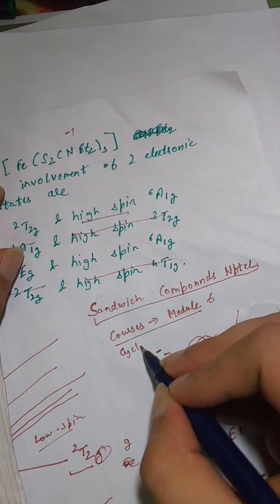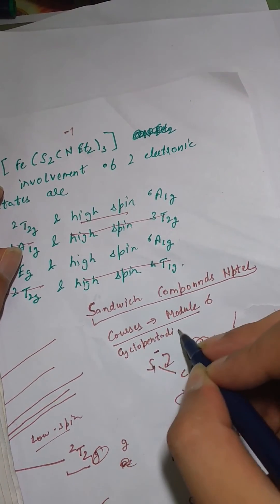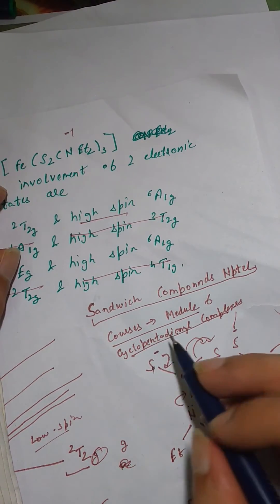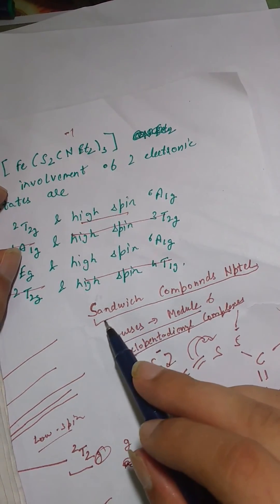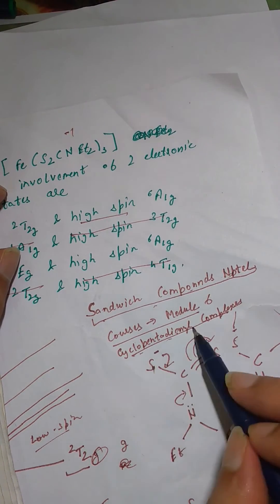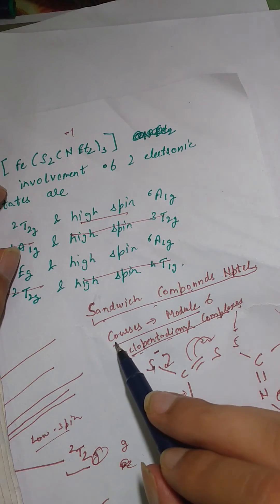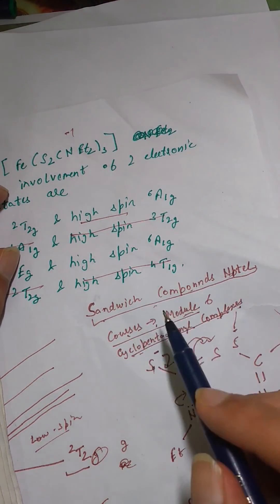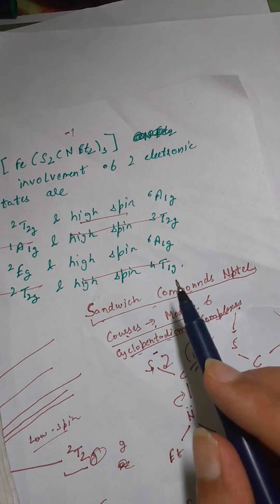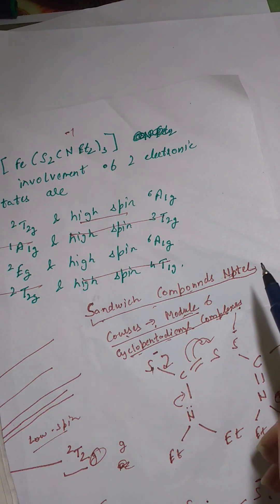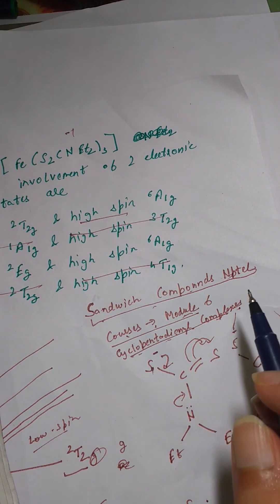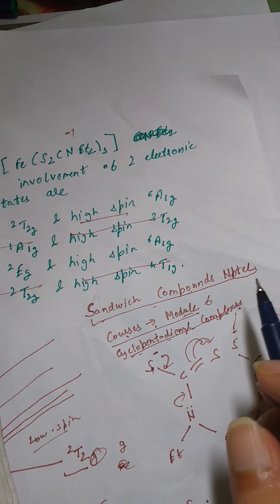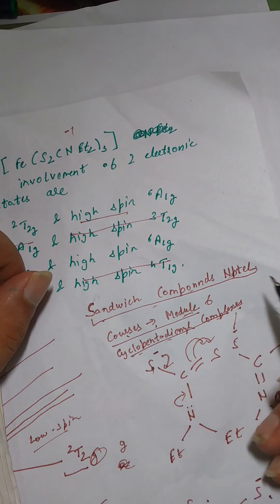module is cyclopentadienyl complexes so I'll request you to go through this link. Just type sandwich compounds NPTEL, the title will be cyclopentadienyl complexes and it will be under the subtitle courses module 6 and you can open that and read about it. It's actually very informative not just if you want to look at the answer but in general also if you want to know about sandwich compounds. There's a lot of research that has been mentioned related to sandwich compounds so it is definitely a must read from my side just to improve your knowledge.